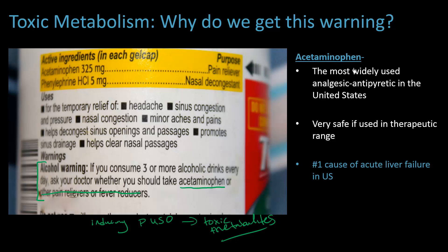Let's start with some background on acetaminophen. It is the most widely used analgesic and antipyretic in the United States — a pain reliever and fever reducer. It is an over-the-counter medication, so it is very safe if used in therapeutic ranges, but it is also the number one cause of acute liver failure in the United States. Part of this is people knowingly overdosing, but acetaminophen is also mixed into many combination drugs, such as Tylenol Cold, and it's not always clear it's included. Patients can unknowingly take far more acetaminophen than they anticipated.